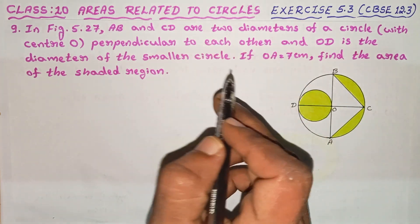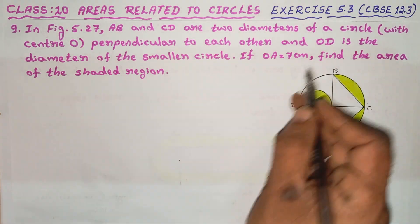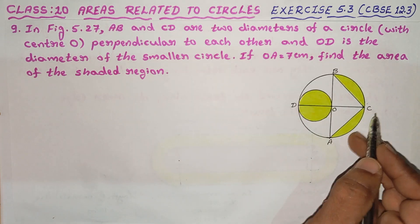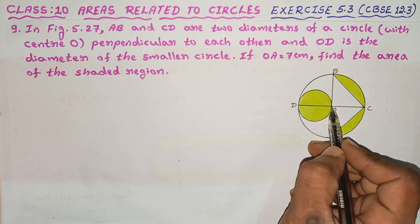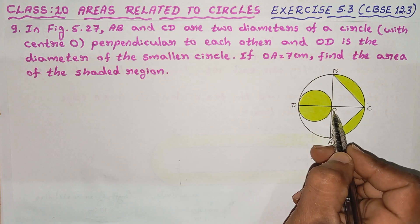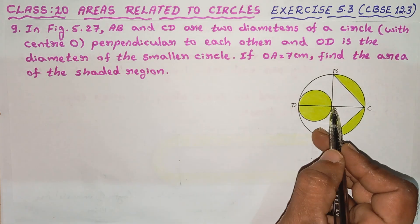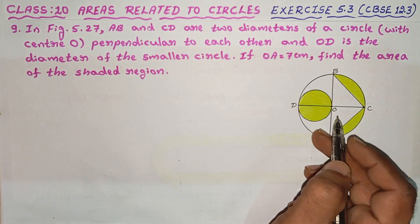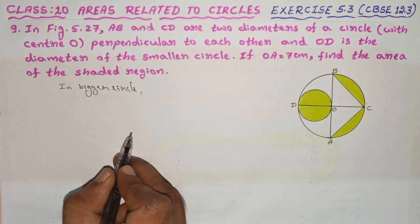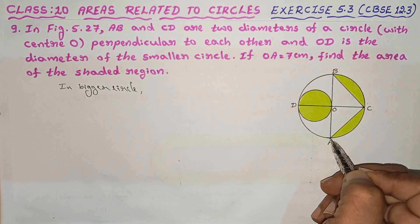Okay. The question is: AB and CD are two diameters of a circle. AB and CD are diameters. This is the center of the bigger circle. This circle — the center of the bigger circle.